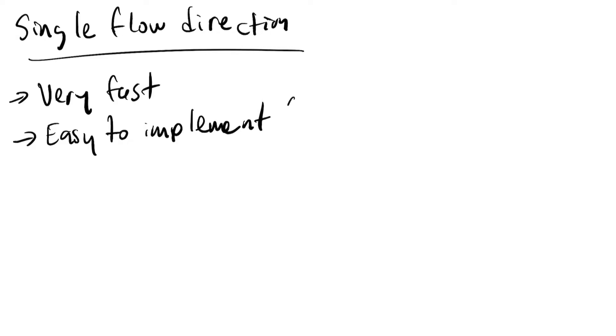Summarizing some of the pros and cons of the single flow direction method, it's very simple to do all the required calculations, and so it's also very fast. It's easy to implement, which in practice means that it's available everywhere.